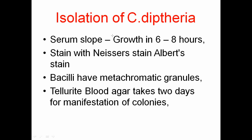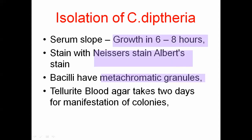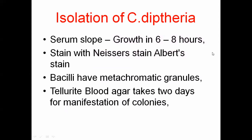They identify the organism using the serum slope as the first collection. Growth in six to eight hours is observed, then Albert staining to identify the microorganism, then under the microscope metachromatic granules are seen — dot-like circles at the head and tail ends. In tellurite blade agar within two days colony formation can be identified.